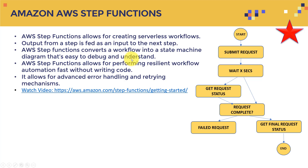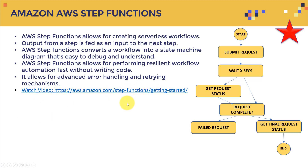AWS Step Functions convert a workflow into a state machine diagram that's easy to debug and understand. They allow for performing resilient workflow automation fast, without writing intensive code. Using these charts you can create very advanced systems, and it also allows for advanced error handling and retrying mechanisms. There is a great video offered by AWS that I highly recommend you watch.